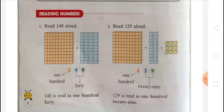Read 129 aloud. For 129, we have 1 big block of 100 small blocks, plus 2 blocks of tens making 20, and plus 9 single blocks making 9 ones. So 100 plus 20 plus 9 equals 129. 129 is read as one hundred twenty-nine — O-N-E, H-U-N-D-R-E-D, T-W-E-N-T-Y, N-I-N-E — 129.